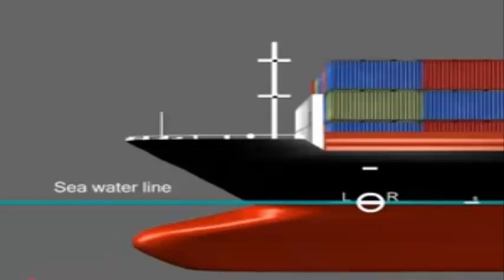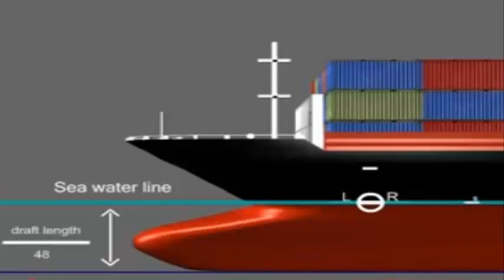The summer load line is the primary mark. It is from this line that all other lines or marks are derived. The winter load line is 1/48th of the summer load draft placed below the summer line. The tropical load line is 1/48th of the summer load draft placed above the summer line.